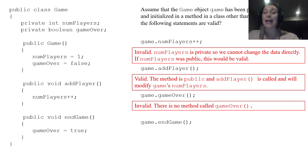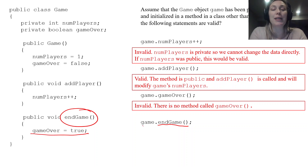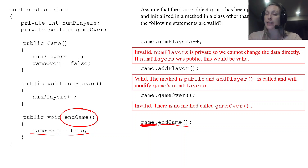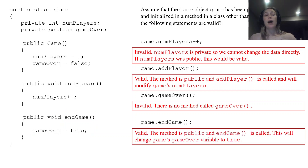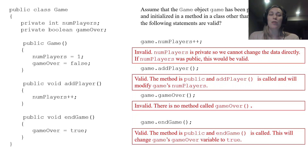The last one: game.endGame(). Again it's a method call. It goes to the endGame method and sets gameOver to true. So this is a valid statement — the method is public, and it changes the game's gameOver to true. Note: if any of those methods were private, we would not be able to call them from another class. Private methods can only be accessed inside the class they're in.